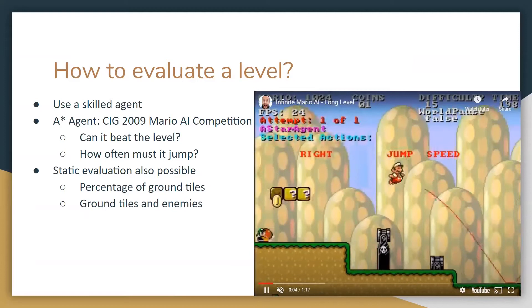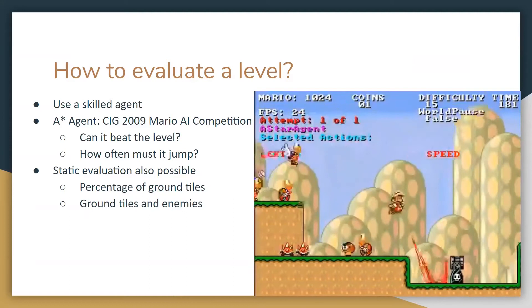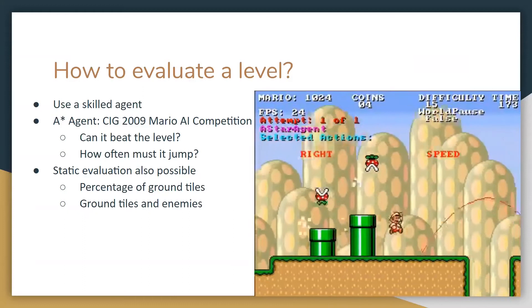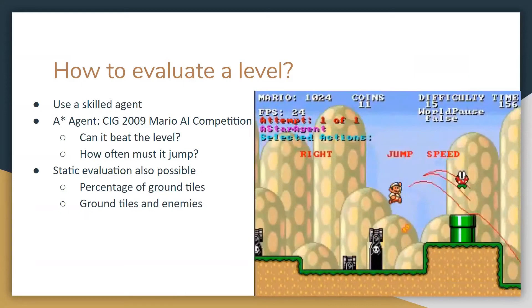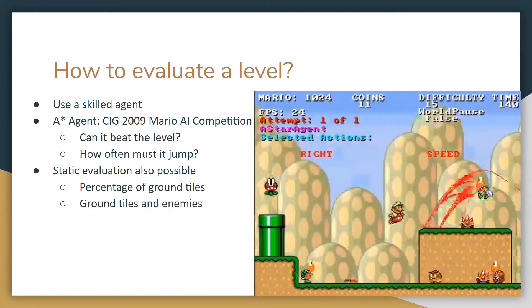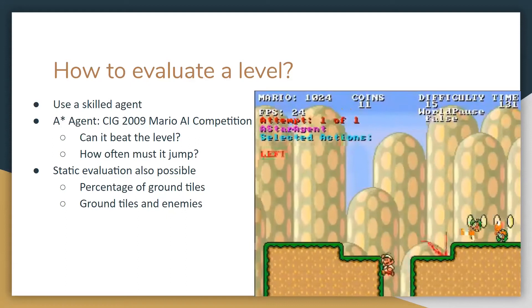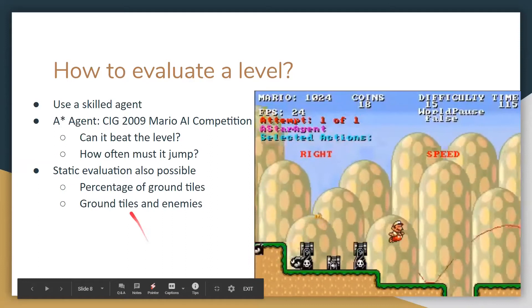We have a generator and an optimizer, and the question left is how to evaluate these levels. Here's a fairly famous agent that won the Mario AI competition in 2009, by Robin Baumgarten. If this agent can beat the level, that means it's at least playable. We wanted to measure not just the progress of the agent but also how hard the level was, so we treated the number of times it had to jump as a proxy for difficulty. We also did some static evaluation based on things like the percentage of ground tiles and enemies.